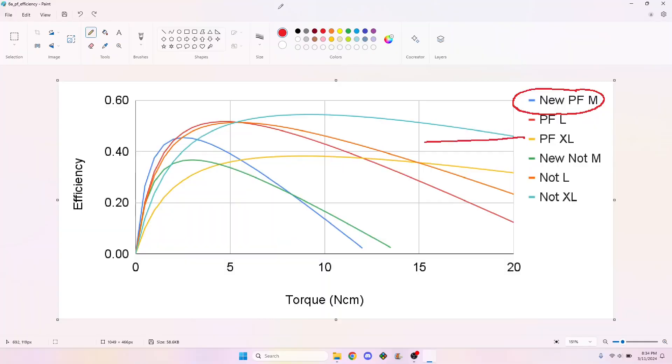The efficiency is a real mixed bag, with the NOT-XL motor performing better than the real one, the NOT-L motor performing similar to the real one, and the NOT-M motor performing worse than the real one.